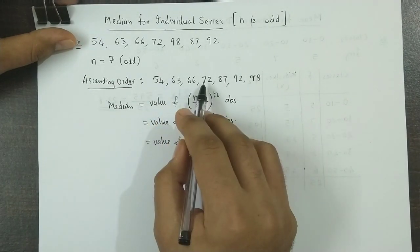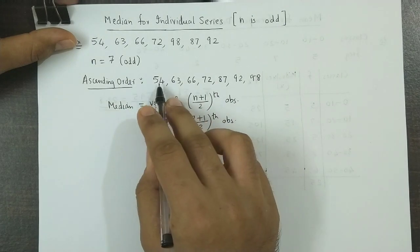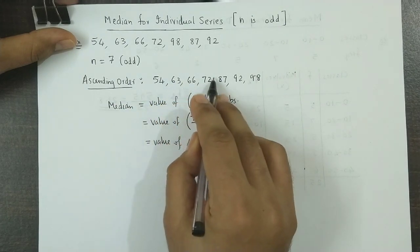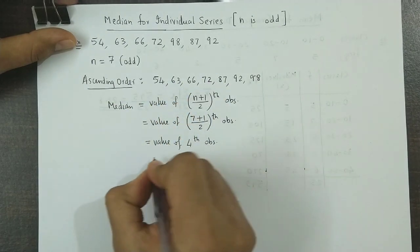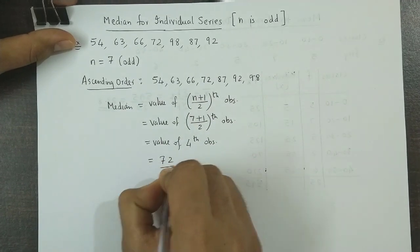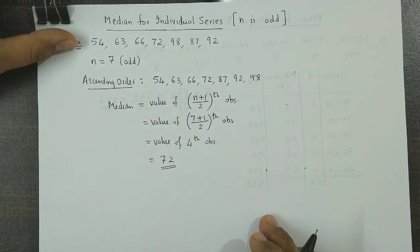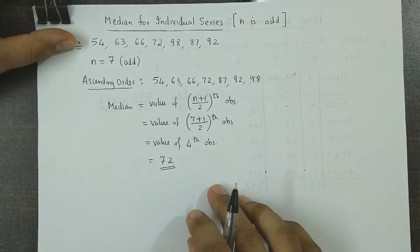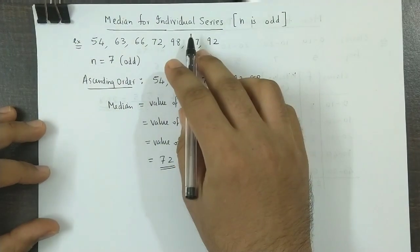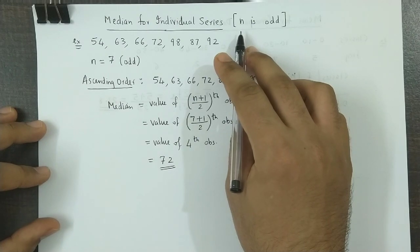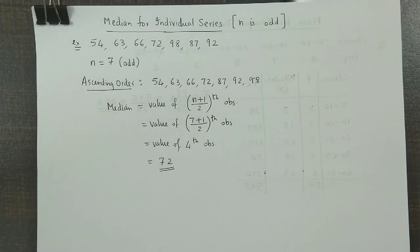Now if we look at the ascending order the fourth value is 1, 2, 3, 4. The fourth value is 72. So the median value is 72. So this is how we calculate the median for individual series when the number of observations is odd.